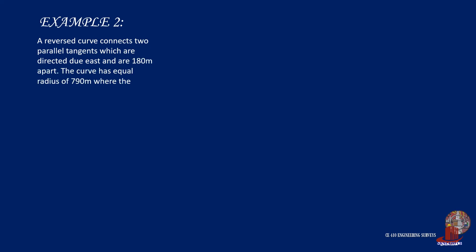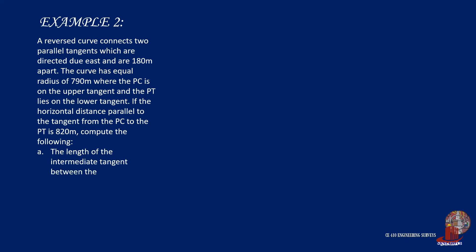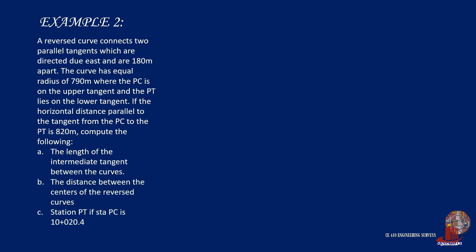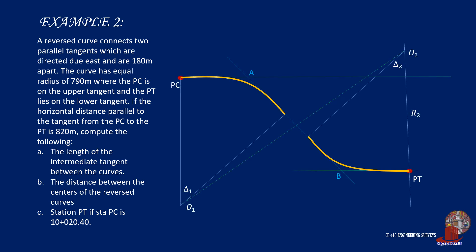Example 2: A reverse curve connects two parallel tangents directed due east, 180 meters apart, with equal radius of 790 meters. The PC is on the upper tangent and the PT on the lower tangent. The horizontal distance parallel to the tangent from PC to PT is 820 meters. Find: (A) the length of the intermediate tangent between the curves, (B) the distance between the centers of the reverse curves, and (C) station PT if station PC is at 10+20.40. There is an intermediate tangent between the two simple curves.